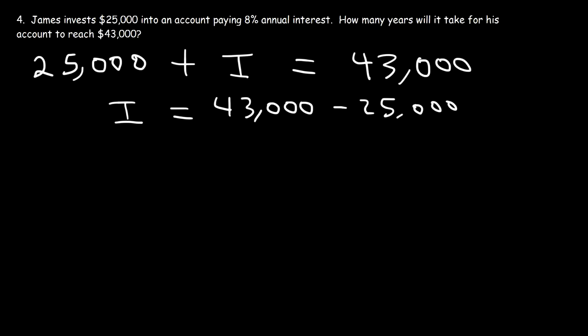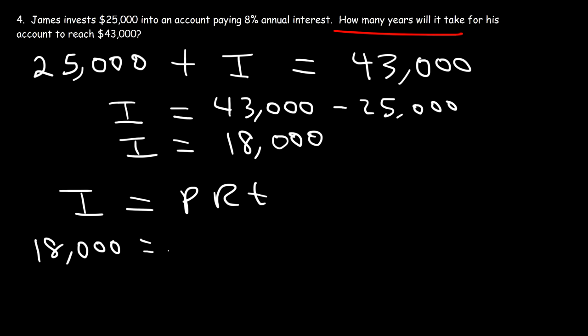So if we subtract those two numbers, you should get $18,000. So that's how much money he's receiving in interest in his time period. And we've got to find out what that time period is. So our goal is to find T. How many years will it take for his account to reach that level? So using this formula, I is equal to P, R, T. We have the interest earned, which is $18,000, starting with a principal of $25,000. The annual interest rate is 8%. 8 divided by 100 is 0.08. So our goal is to find the value of T.